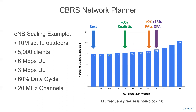Here's another example of the CBRS network planner and scaling of eNodeB requirements. This example assumes 10 million square feet of outdoor area, 5,000 clients requiring 6 megabits down and 3 megabits up, 60% duty cycle, and 20 megahertz channels. From best case to the realistic case, we only require 3% more eNodeBs — because of LTE's frequency reuse and intercell interference coordination capabilities, we can reuse those channels more often. Going to more conservative use cases with priority access licenses deployed, we only require 9% more eNodeBs. And in the worst case scenario in a dynamic protection area, we only require 13% more eNodeBs than the best case scenario.